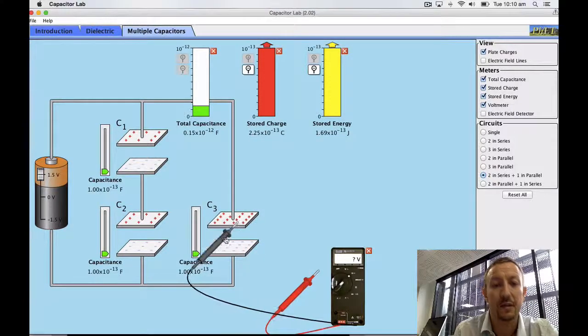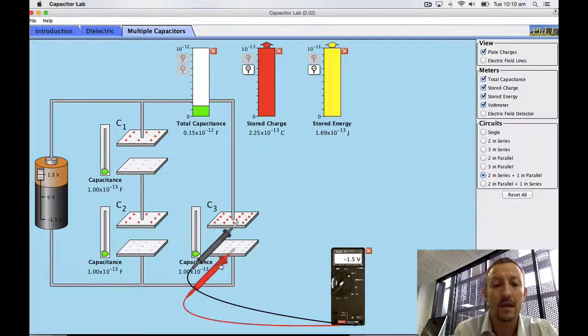Let's just look at the voltage across each of the plates. Note that across the battery we've got 1.5 volts. In this case I've got 1.5 volts going through this branch.